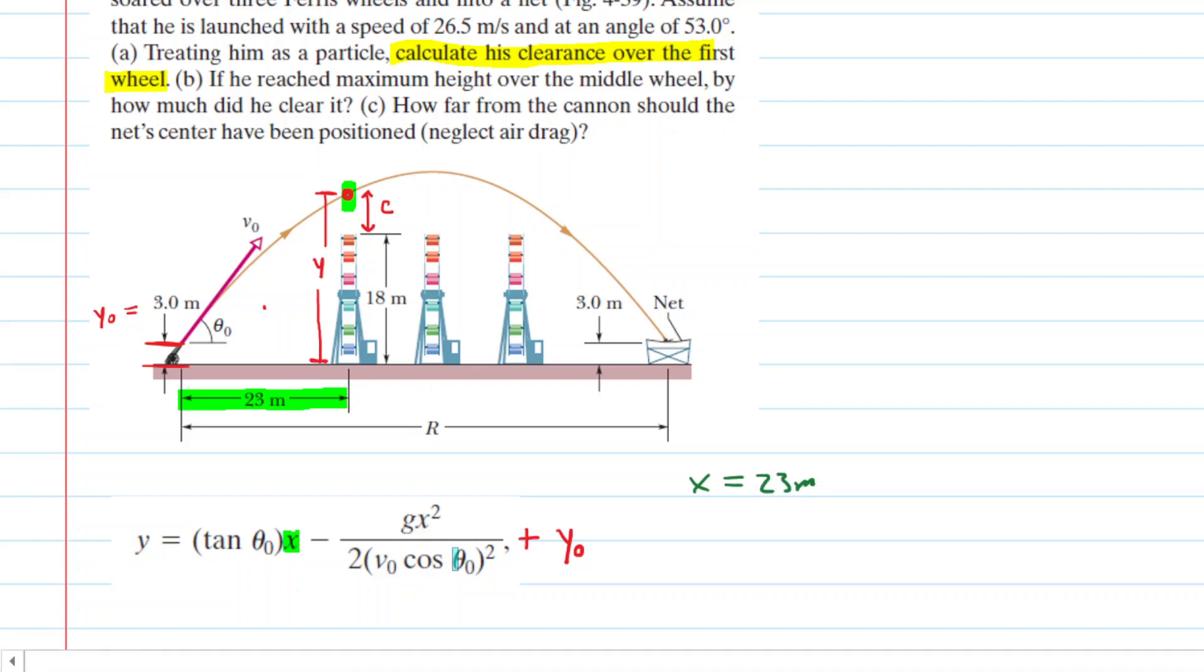We also know the angle at which the acrobat is launched, so theta naught equals 53 degrees. We need G, which is just 9.8 meters per second squared. And finally, the initial speed is given as 26 and a half meters per second.